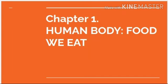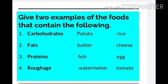Hello children, hope you all are fine. In this module we will see Chapter 1: Human Body - Food We Eat. Exercise questions. The first question is: give two examples of foods that contain the following. First one is carbohydrates.